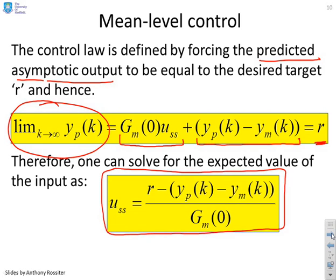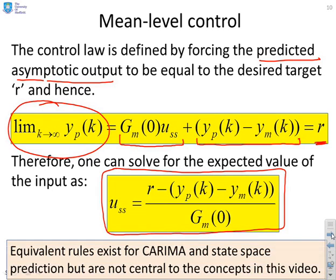And you'll find here is my control law. My expected steady-state value, USS, is given by R minus YP plus YM, all divided by GM of zero. And you'll notice this is a very simple control law, requires minimal computation. There are equivalent rules for ARIMA models and state space models and so on, but that's not central to the concepts in this video.